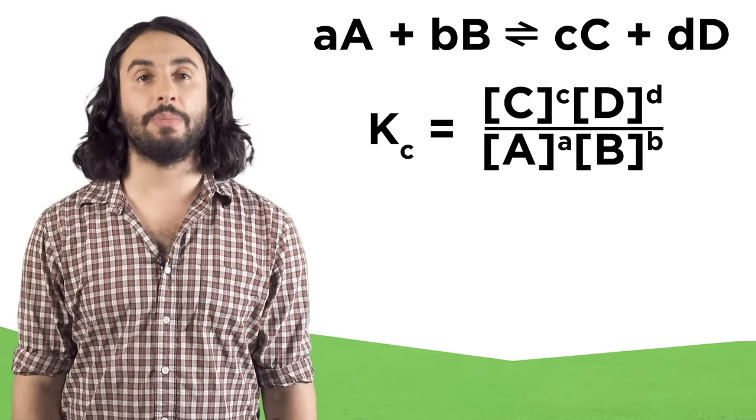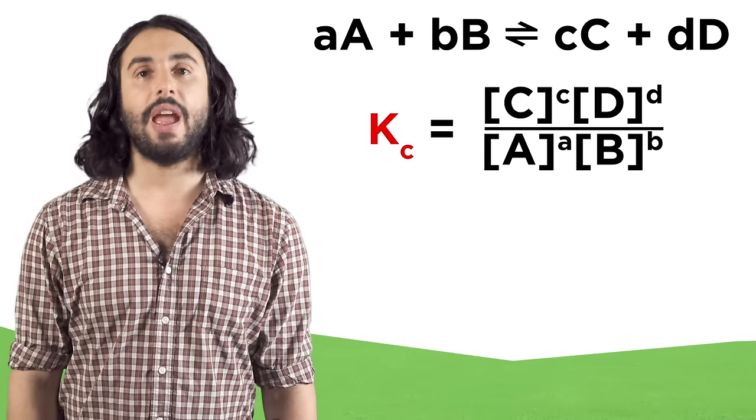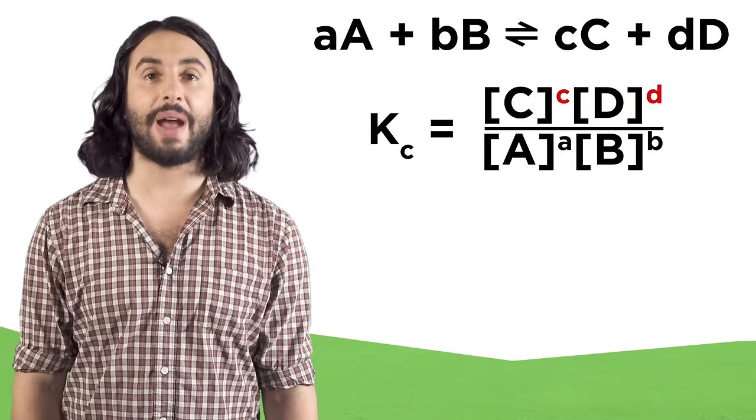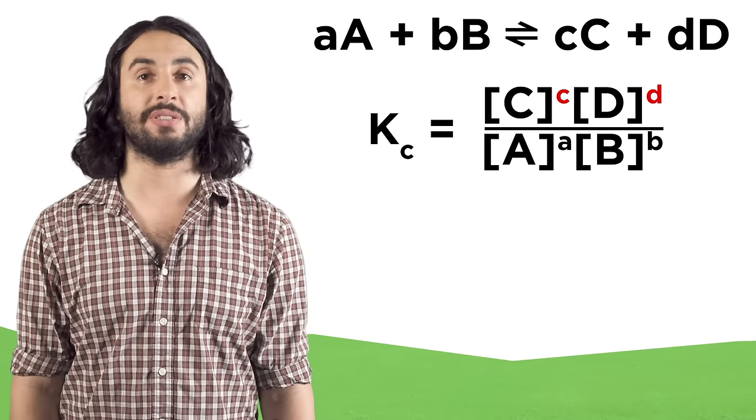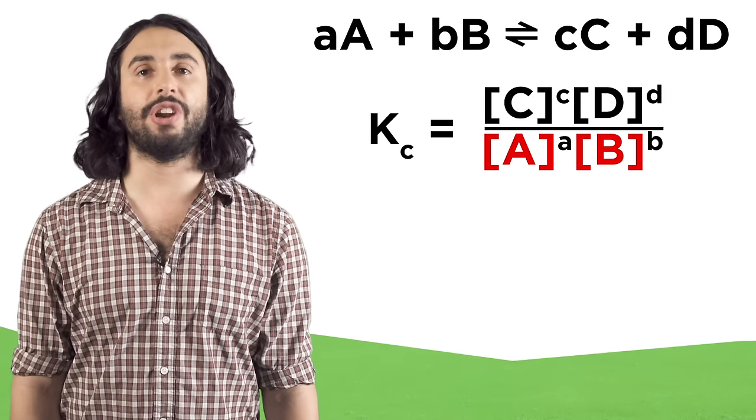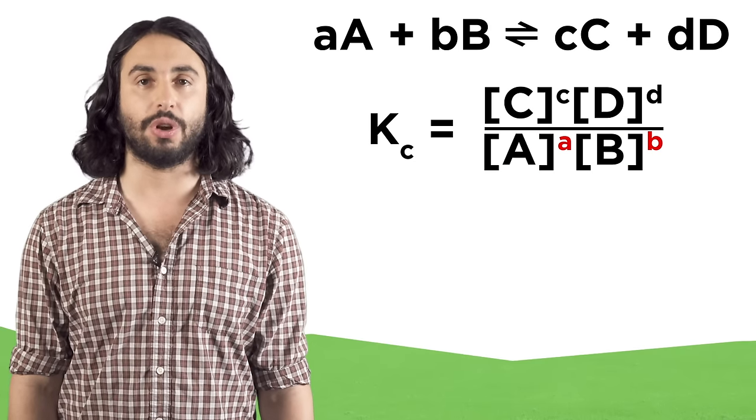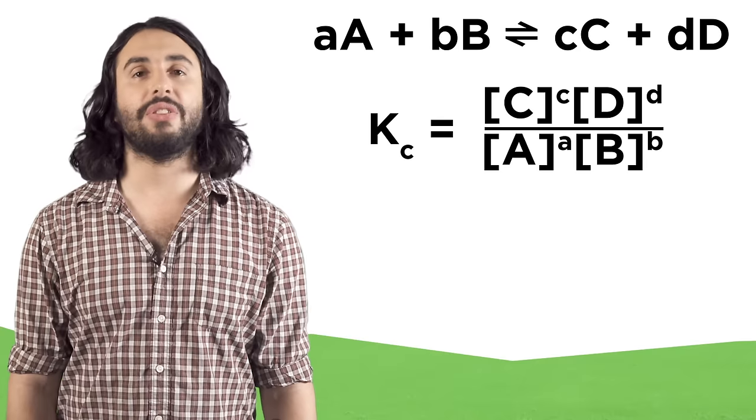But first, let's learn about equilibrium expressions. Every equilibrium has an equilibrium constant, Kc. It will be given by the concentrations of the products, each raised to the power of their stoichiometric coefficients, over the concentration of the reactants, each raised to the power of their stoichiometric coefficients. This is called the equilibrium constant expression.